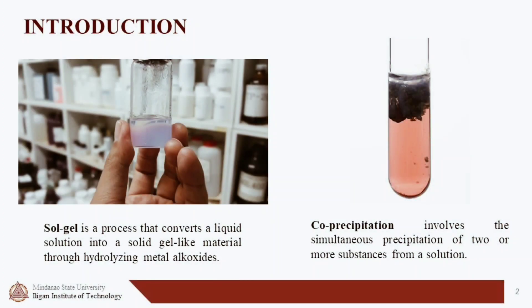Sol-gel and co-precipitation are two different techniques to fabricate materials. Sol-gel turns a liquid solution into a solid-like gel by forming a network of particles. It is versatile and can make materials with different properties like size, shape, and composition.